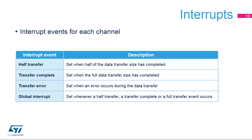Each DMA channel is designed with this group of interrupt events. The half-transfer interrupt flag is set when half the data has been transferred. The transfer complete flag is set when the transfer is complete. The transfer error flag is set when an error occurs during the data transfer. The global interrupt flag is set whenever a half transfer, a transfer complete, or a full transfer event occurs.